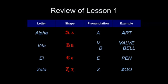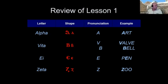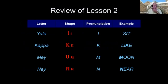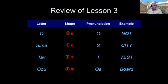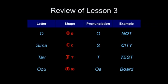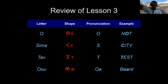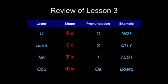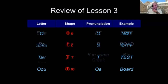Alpha — A. Vita — V or B. E — E. Vita — V. Thank you Thomas. Dina, can you do the next one? Sima looks like a C but it's actually an S as in 'city.' Tov — T as in 'test.' And U is like O, as in 'fourth.' Very good Dina, thank you.